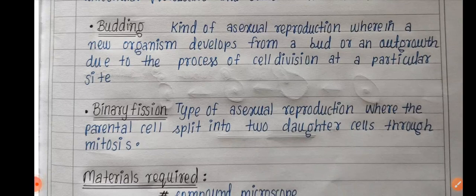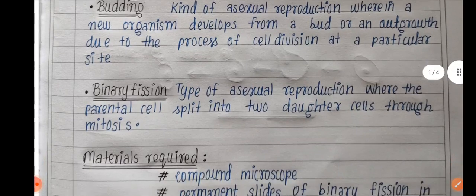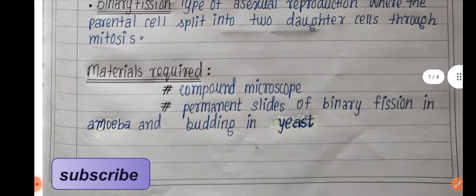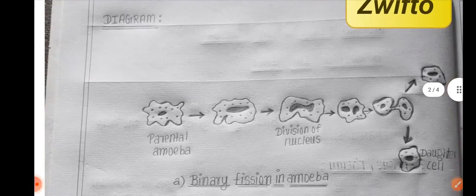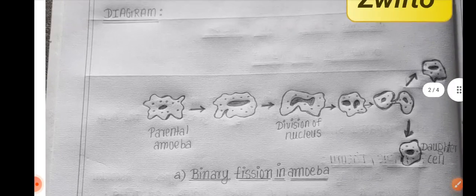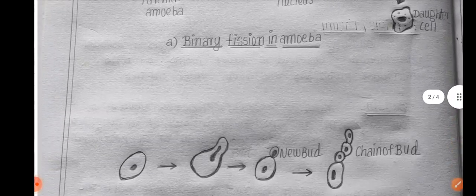Then write materials required: compound microscope and permanent slides of binary fission in amoeba and budding in yeast. The diagram should be on the right-hand side, as the white page will be on the right side.